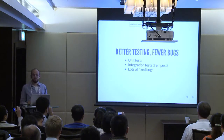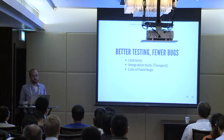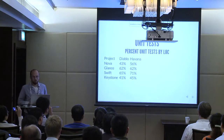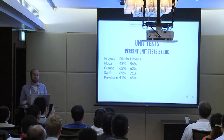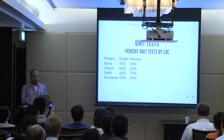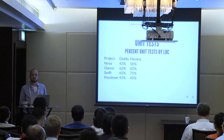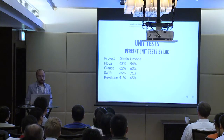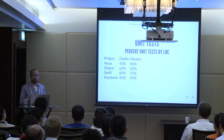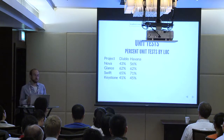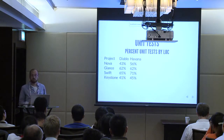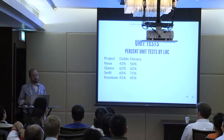Better testing, fewer bugs — that's the goal. There are some big categories: unit testing, integration testing, and fixing all the bugs we keep finding. It turns out in unit testing, we're actually no better than we were before. Comparing the percentage of lines of code for unit tests to actual project code, we haven't grown it by that much. We had good coverage from the beginning — about 80-90% in Nova. Whenever we add a new feature, we make sure there are tests for it, but we don't spend time adding unit tests just for the sake of it. This actually caught me off guard — I figured we'd do much better.